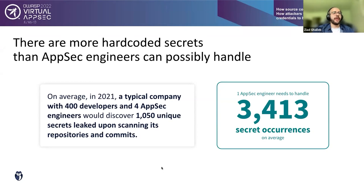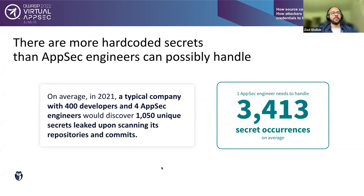A typical company with 400 developers and 4 AppSec engineers would discover 1,050 unique secrets when scanning their full git history. Each unique secret appears on average in 13 different places across VCS repositories and files. Multiplying 1,050 unique secrets by 13 occurrences, then dividing by 4 AppSec engineers, means one AppSec engineer needs to handle more than 3,400 occurrences on average — far more than is manageable.